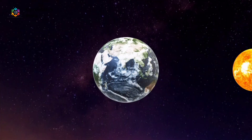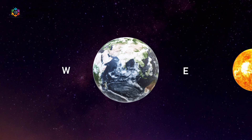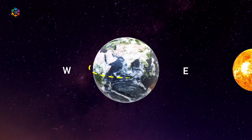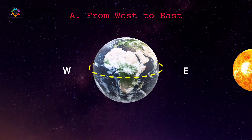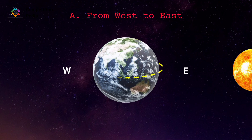Now the question is: in which direction does it spin? Since the Sun is to our right, it is obvious that this is East, and naturally this is West. The topmost direction is North and the bottommost direction is South.